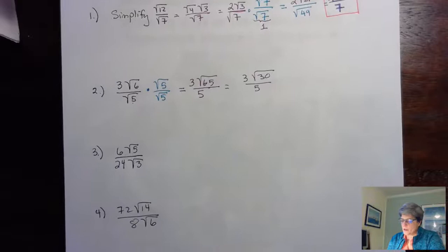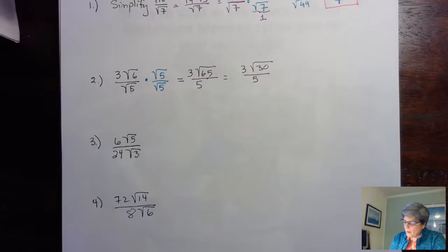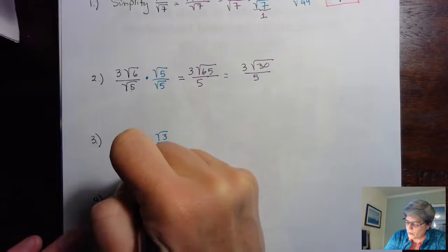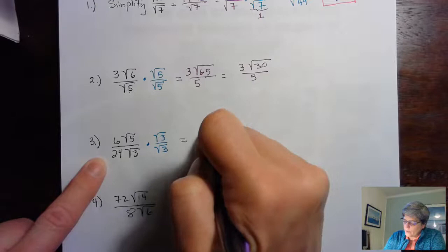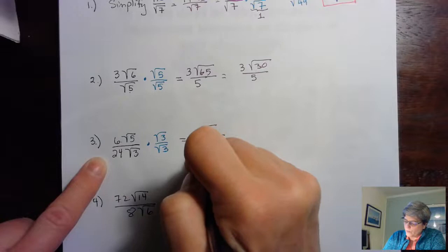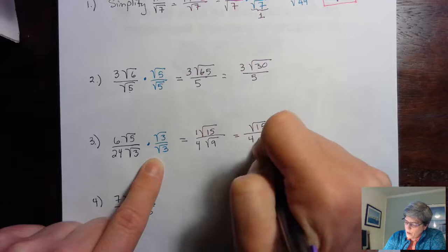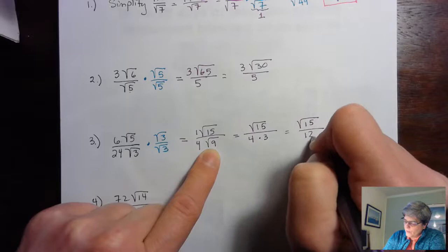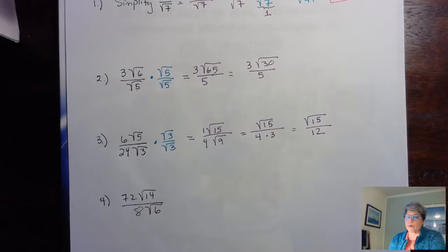Let's do number 3. The square roots can't be simplified. 6 over 24 simplifies to 1/4, so we want to take care of that, and we multiply by the square root of 3 over the square root of 3 to eliminate the radical in the denominator. So 5 times 3 gives the square root of 15 in the numerator, 6 over 24 is 1 over 4, and the square root of 3 times the square root of 3 is the square root of 9, which is 3. That gives us the square root of 15 over 12. Again, 12 and 15 share a common factor, but one is under a square root and one isn't, so we can't divide those.